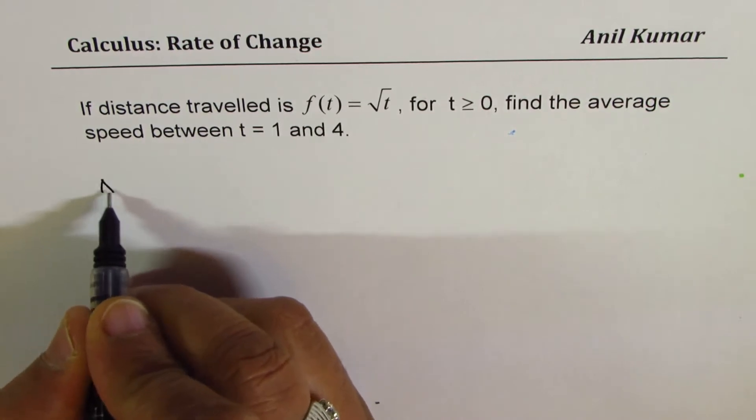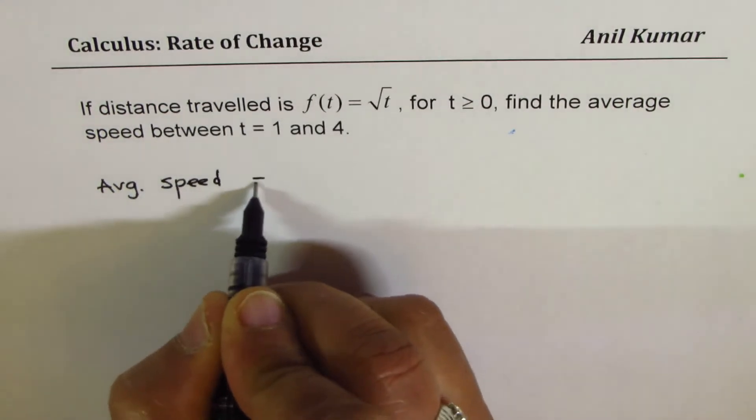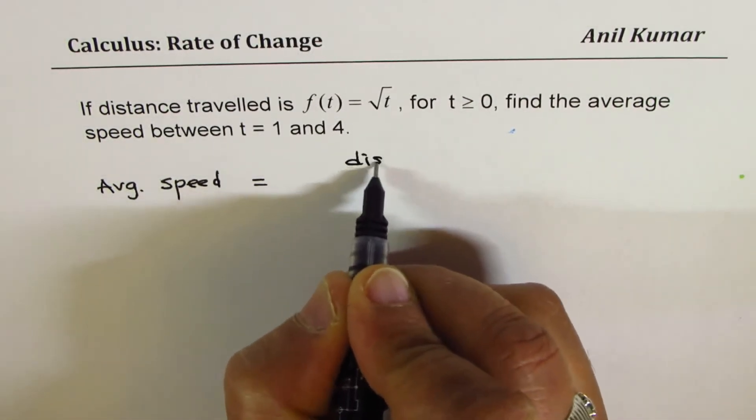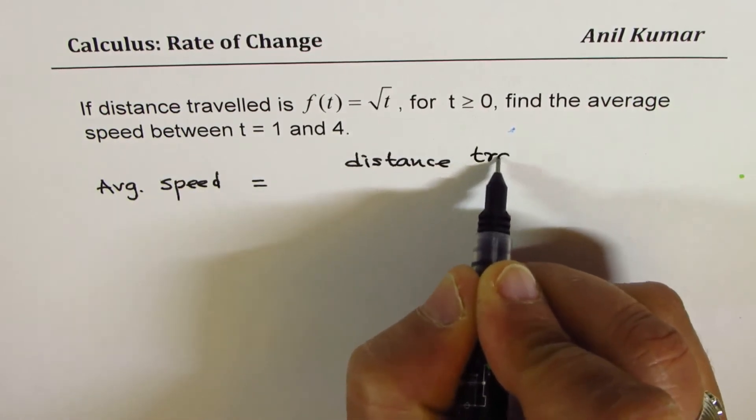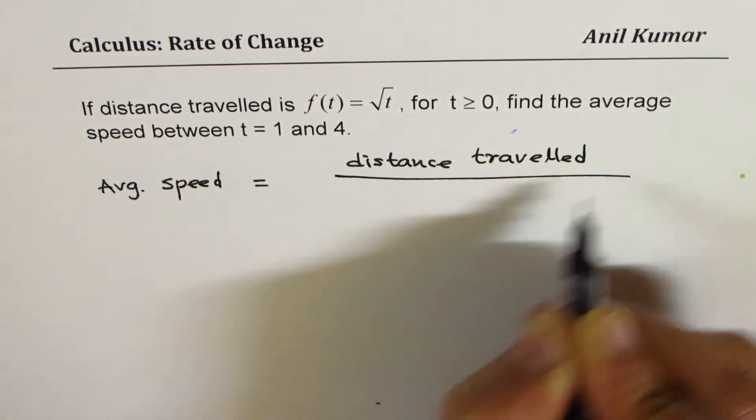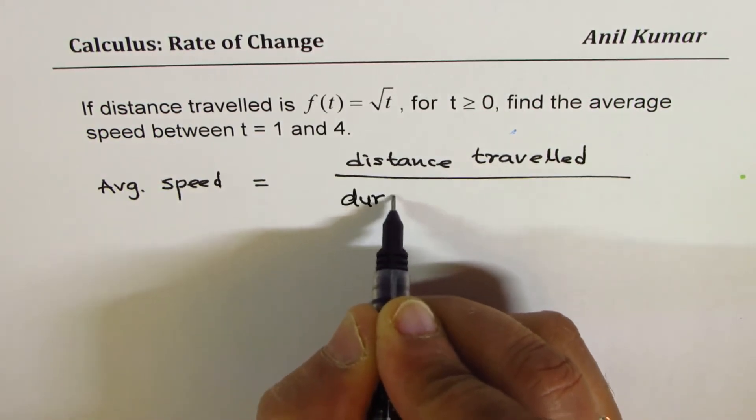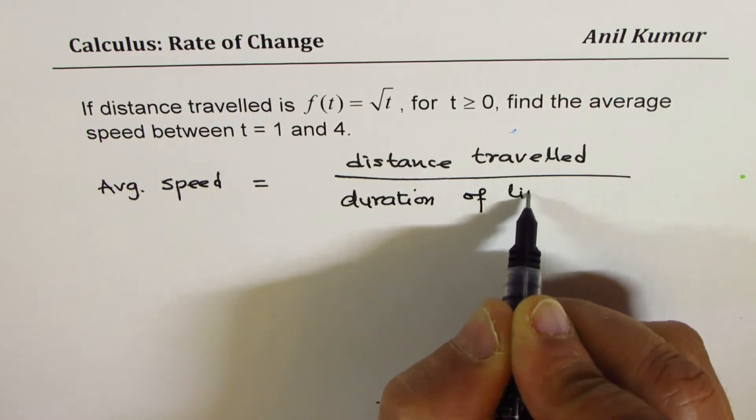What is average speed? Average speed can be written as distance travelled over duration of time. Perfect.